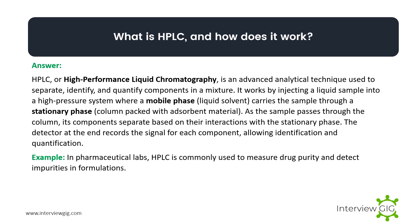What is HPLC and how does it work? HPLC, or High Performance Liquid Chromatography, is an advanced analytical technique used to separate, identify, and quantify components in a mixture. It works by injecting a liquid sample into a high-pressure system where a mobile phase carries the sample through a stationary phase. As the sample passes through the column, its components separate based on their interactions with the stationary phase, and the detector records a signal for each component allowing identification and quantification.